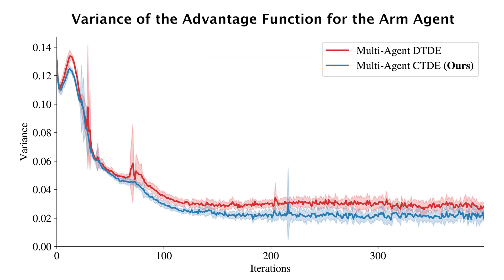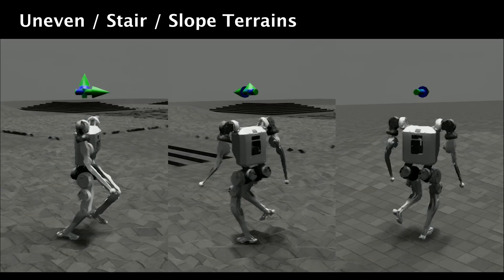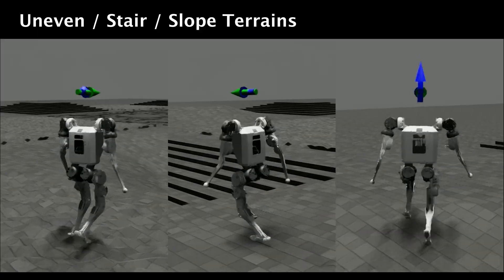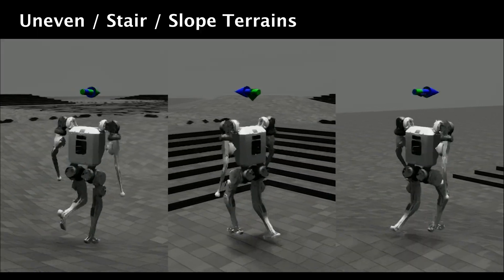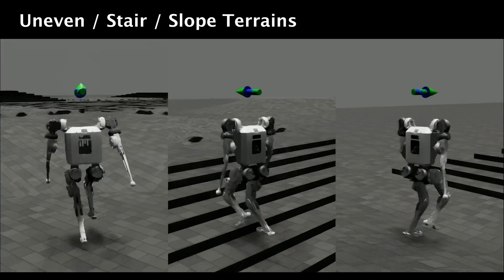By extending the training environments from flat ground to more complex terrains including uneven surfaces, stairs, and slopes, our policy learns to generate robust and adaptable whole-body motion.